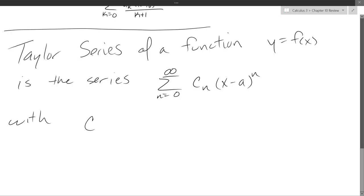So Cn is going to be the nth derivative evaluated at a divided by n factorial. So the numerator is the nth derivative evaluated at x equals a, and this is just n factorial.